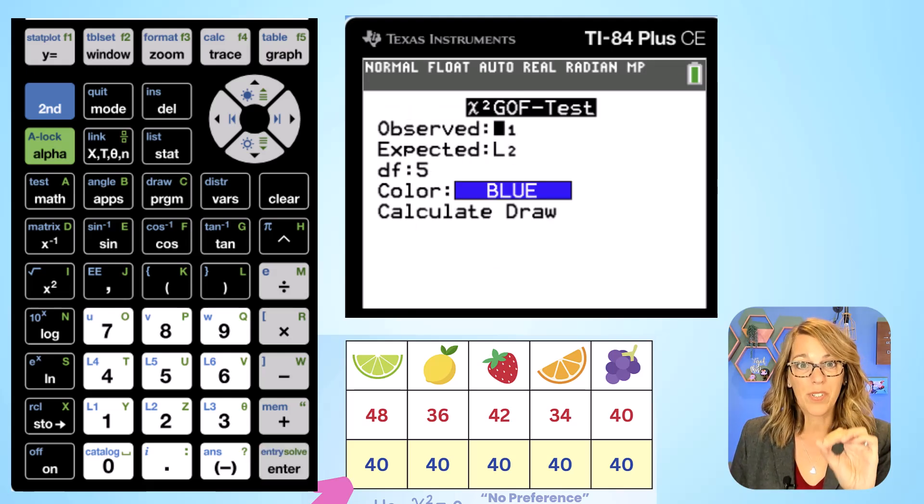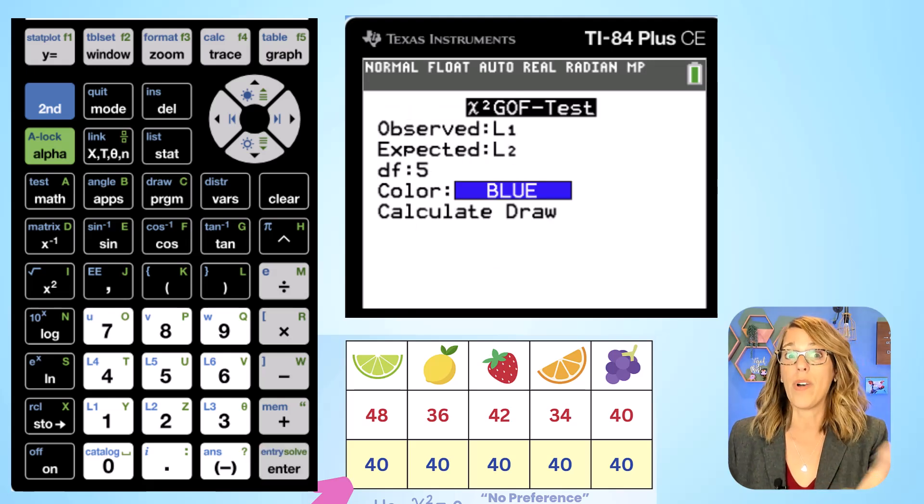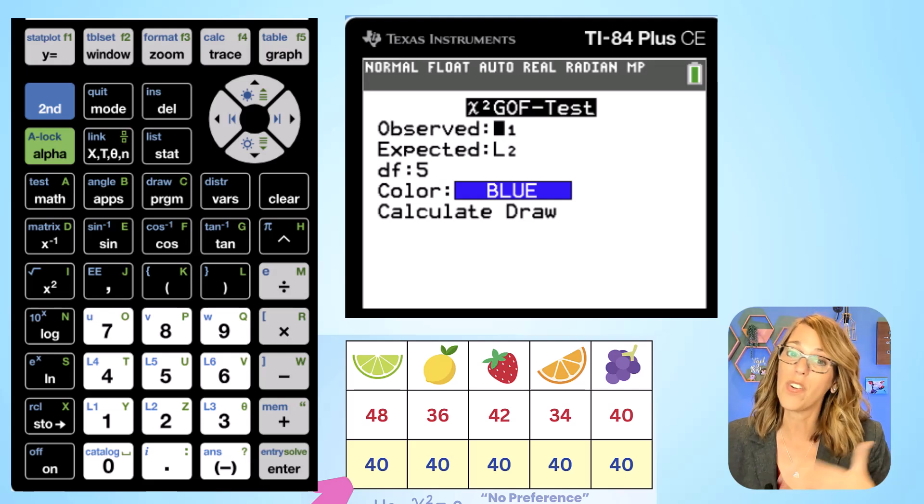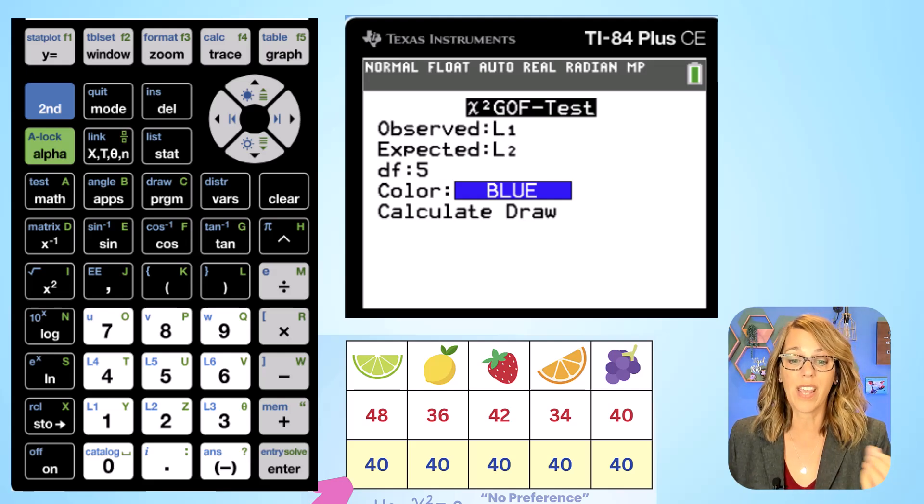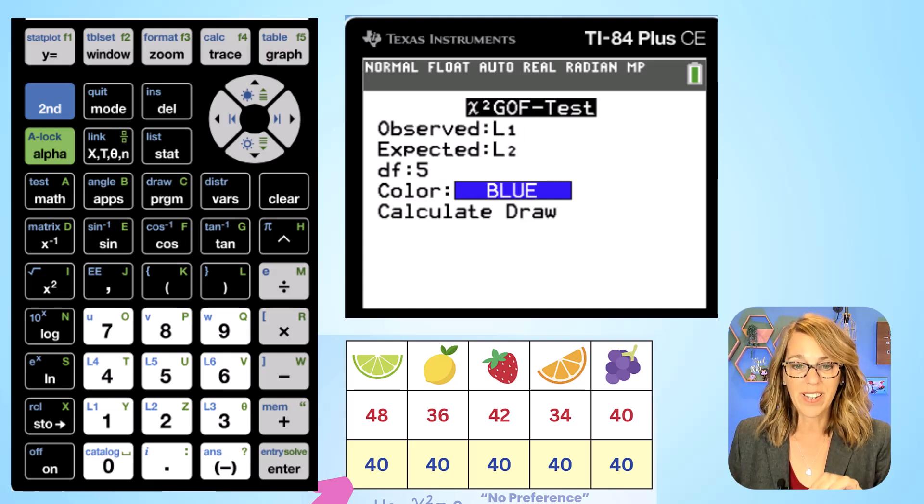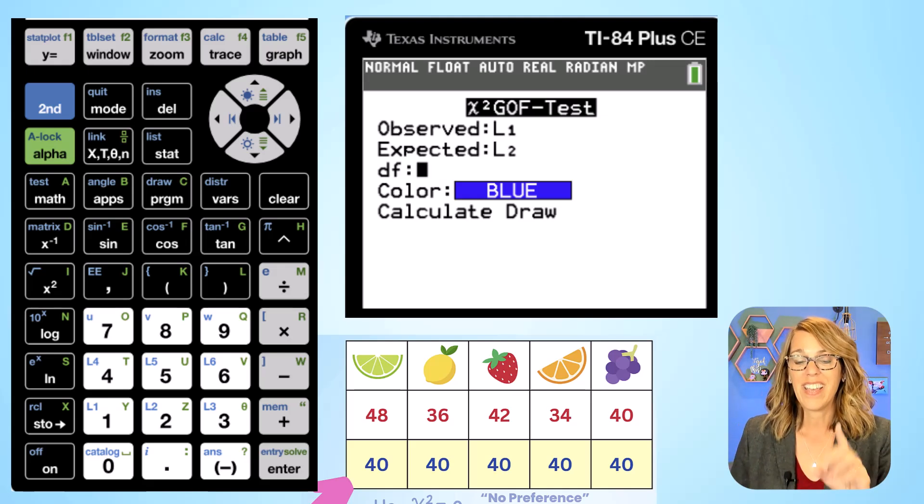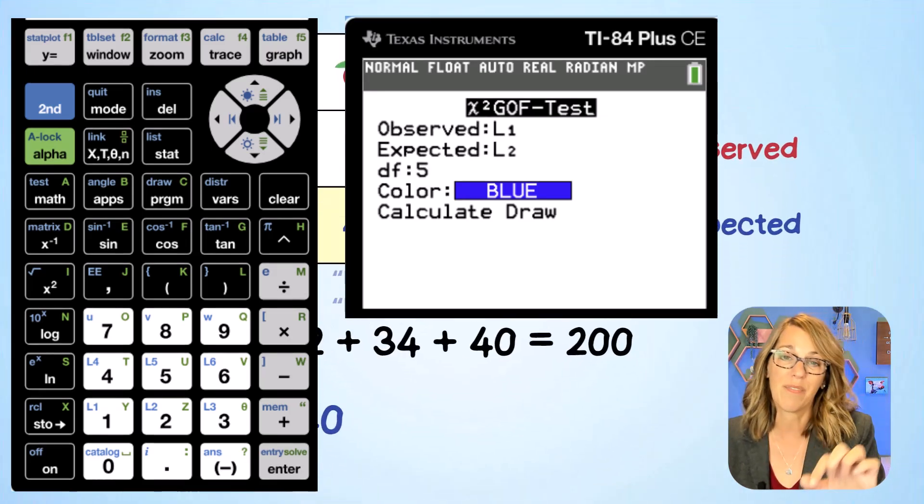It's asking me where my observed values are. Mine are in L1 which is perfect. Now if you needed to you could change the list name. So say your observed was in L3, you could go second followed by three to get to L3 but mine is in L1. Let me go back to second L1. I'm going to arrow down once. This is L2 and that's exactly where my expected values are.